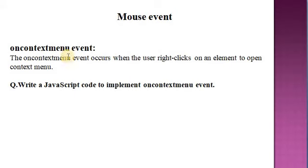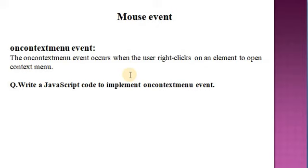The next point is the on context menu event. The on context menu event occurs when the user right-clicks on an element to open the context menu. If we click the right button of the mouse, then the context menu will be displayed. Let us see one example related to that event. Write JavaScript code to implement the on context menu event.